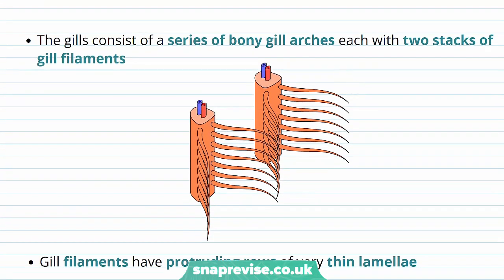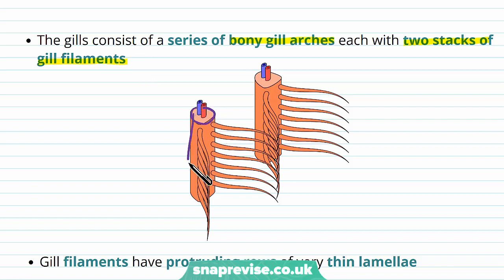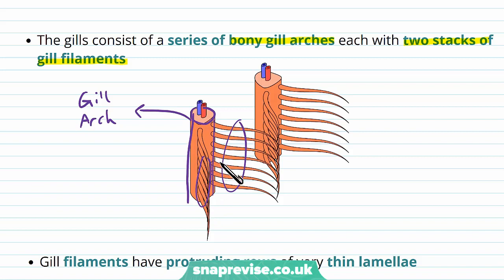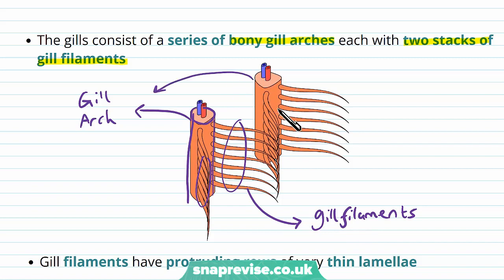So what are the structures of the gills? Going from an outside-in perspective, the gills consist of a series of bony gill arches, which are these larger structures here. Each gill arch has two stacks of gill filaments. To illustrate that in a diagram, we have one arch — this structure here — and this gill arch has two sets of filaments, set one and set two. Then we've got another arch here which has its own two sets of filaments, and so on. There are also vascular vessels running through the gill arches through their centre.